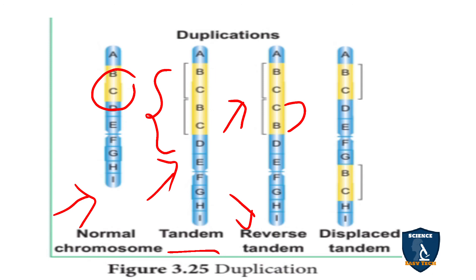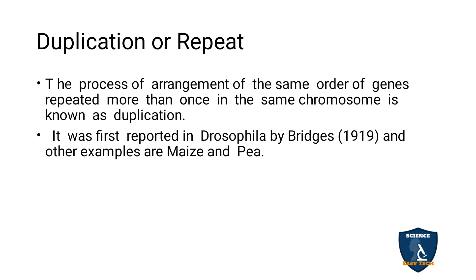The third type is displacement tandem, or displacement duplication. Here, the segment B and C is displaced to another location on the chromosome. When the same segment is repeated in a chromosome, it is called duplication, and it was reported in Drosophila by Bridges in 1919. Examples include maize and pea.